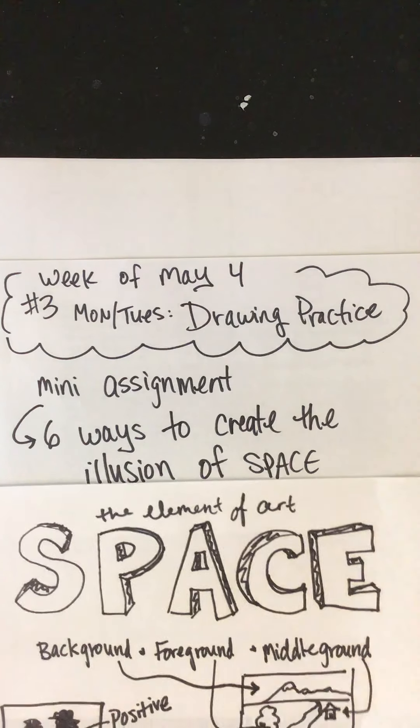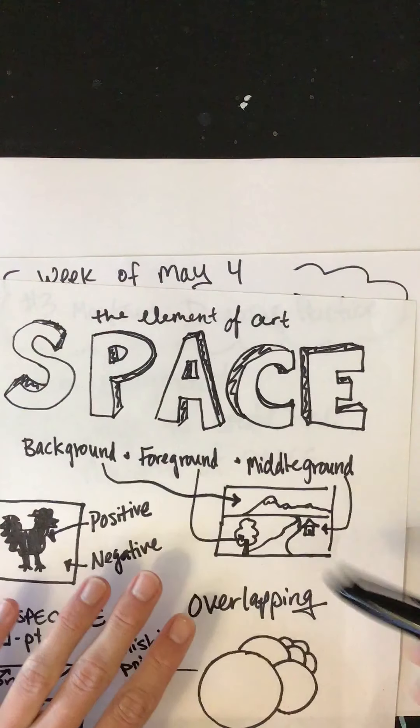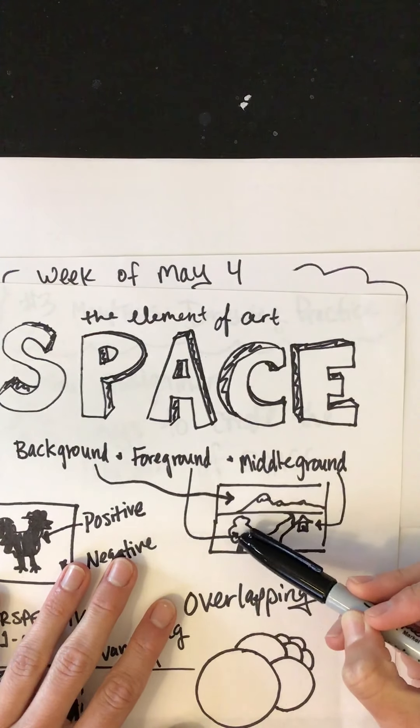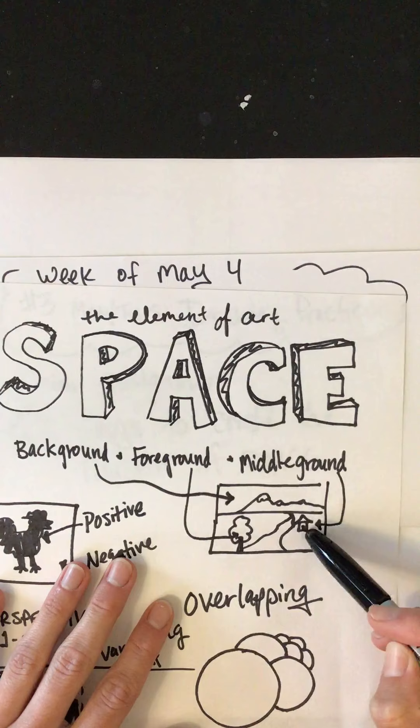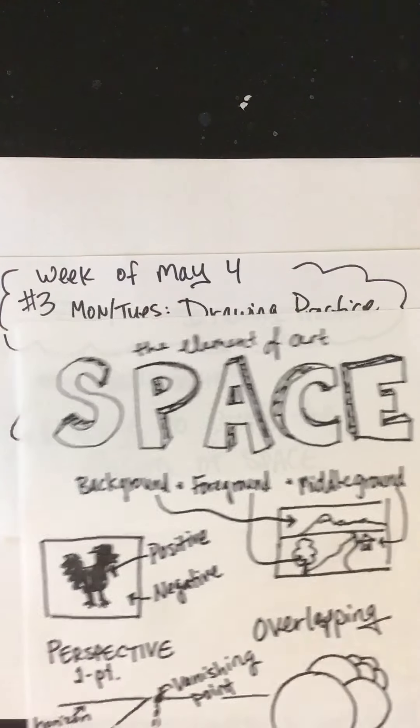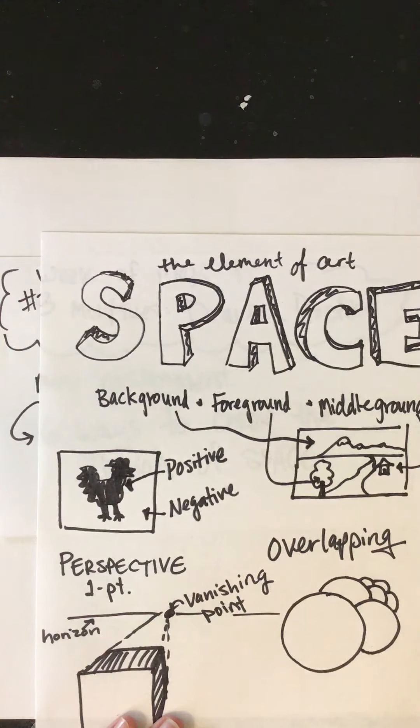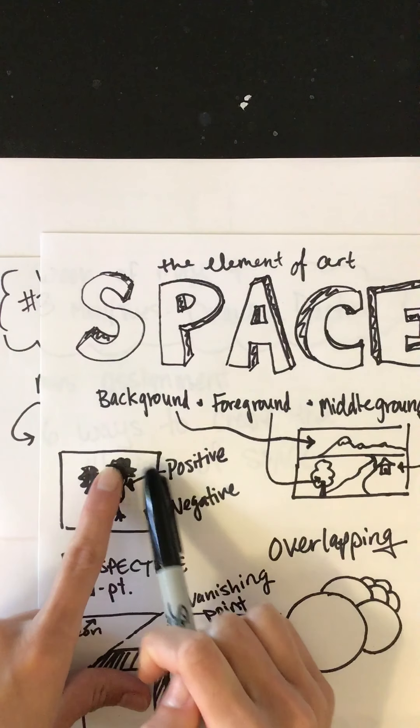So the element of art space, it really has to do with a couple main things. The background, foreground, and middle ground. If you're looking at a picture, so here's my beautiful landscape, there's the background with the mountains, the foreground with the tree closer to the front, closer to you, the viewer, and then the middle ground is just that little house kind of in between where the tree is and the mountains are. Space also has to do with positive and negative space. I mentioned that in my video with my coffee cup. So all around here is negative space, but the actual object is positive space. So same with this little chicken colored in is the positive space and all around it is the negative space.